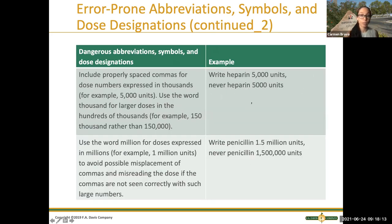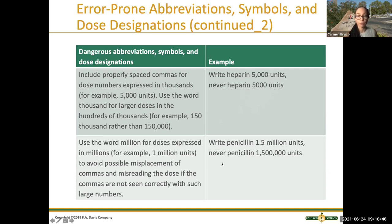Again, for heparin: if you have a number like 5,000, you want to put the comma there instead of writing all the zeros, because this can easily lead to missed or added zeros. For penicillin, a common dose is 1.5 million, and you write it as '1.5 million' instead of putting all the zeros. It really helps when you read the reason why and how something can be misread.